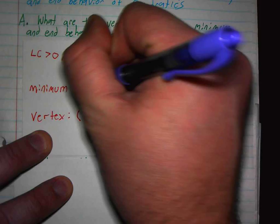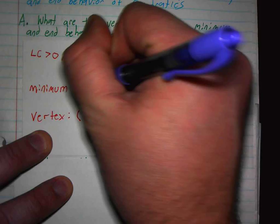So the min or max always comes off this coordinate. Then I answer the three questions: what's the vertex? Negative 2, negative 10. What's the max or min? It's a min at negative 10. And it is up and up.